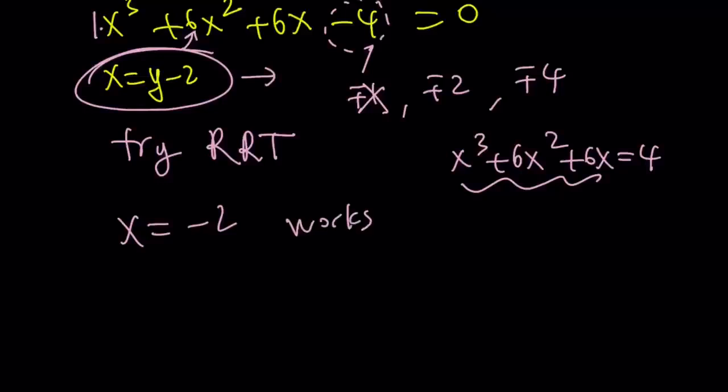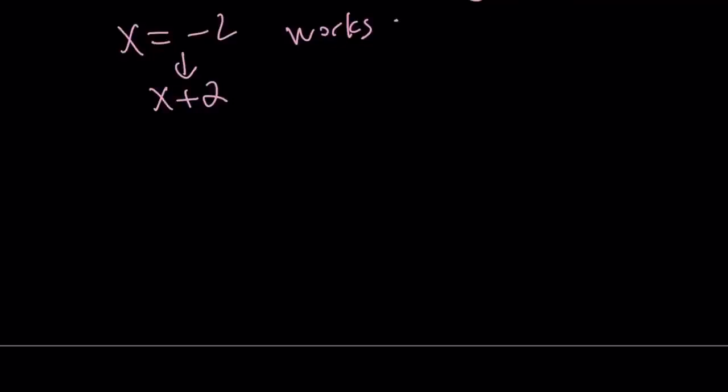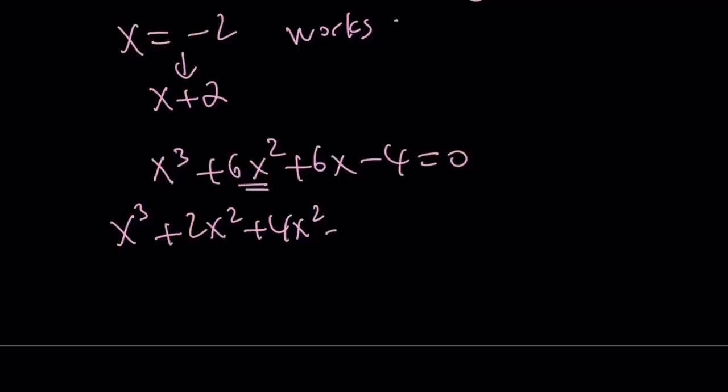So how do we go from here? Since we know x equals negative 2 works, factor theorem tells us that x plus 2 is a factor. So we can kind of divide by x plus 2, polynomial long division, whatever. My original equation was x cubed plus 6x squared plus 6x minus 4 equals 0. Now I'm going to arrange the terms x cubed plus 2x squared, and then plus 4x squared to get 6x squared. Now I need to add 8x to make this divisible by x plus 2. And then I have to subtract 2x to make up for this, and then I have to subtract the minus 4.